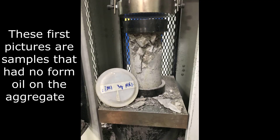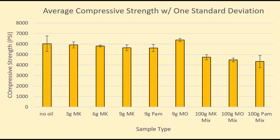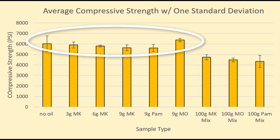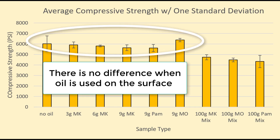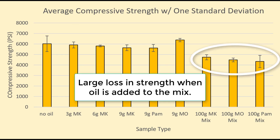The cylinders that were coated in form oil had very typical breaks. However, the ones where form oil was mixed in, they exploded. This plot shows compressive strength for samples with different types and amounts of form oil. The ones on the left have very similar performance — those are the ones that just had form oil on the surface. However, when form oil was mixed in, there was a big drop — those are on the right.